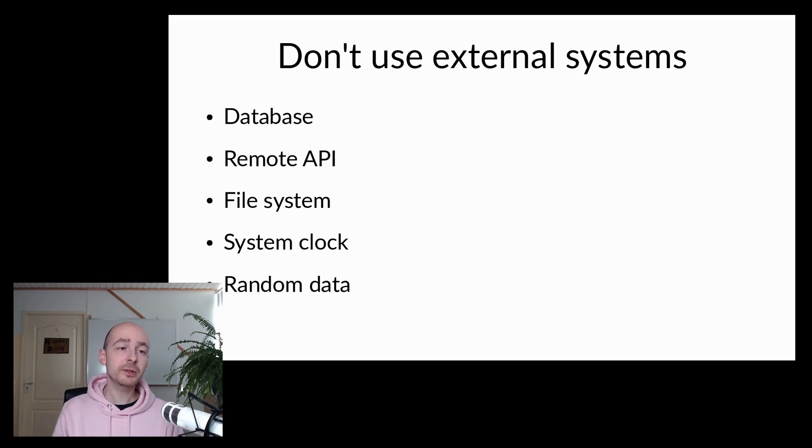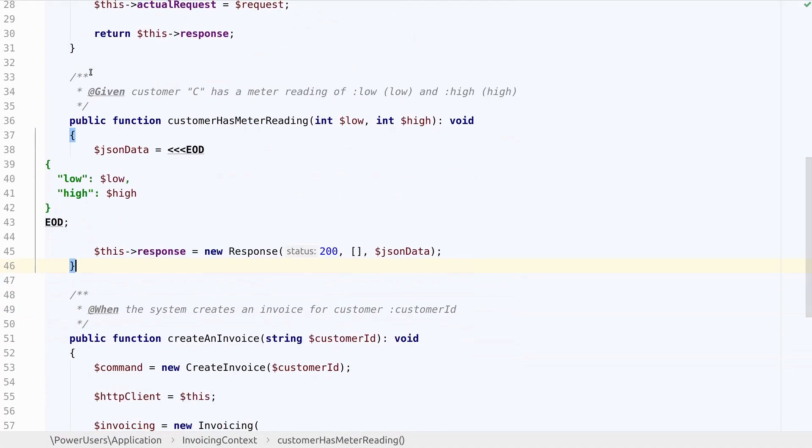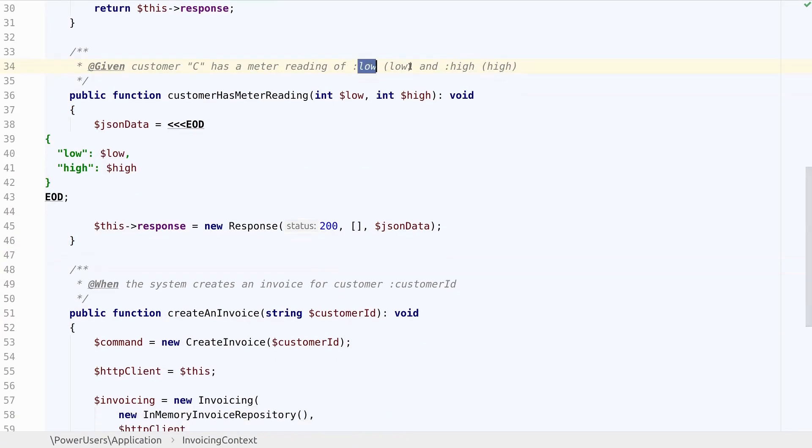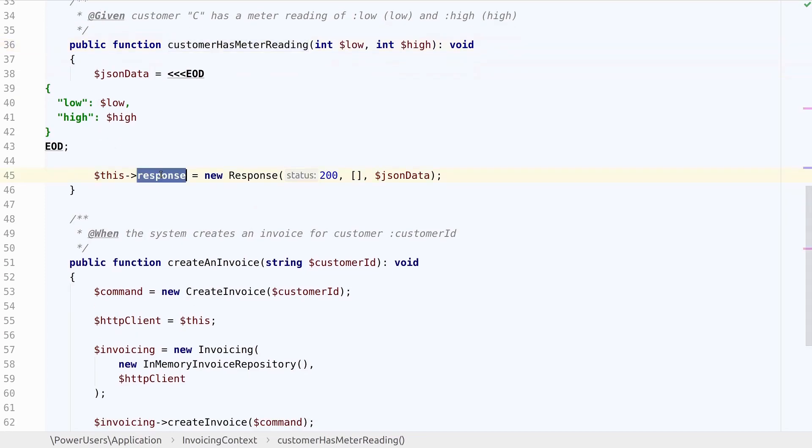In our case, we wouldn't want the actual Energira API to be used in our test scenario. If we'd still get the meter readings directly from the Energira API using the HTTP client service, we'd have to create some kind of fake response in our tests. Our step definition would then look something like this. First, we have a step definition for given customer C has a meter reading of low and high. Here you can see the placeholders for the actual values in our example 0 and 100. And BHAT will run this method. And in this method, we prepare the JSON data that we expect the Energira API to return to us. And we use a property on the context class to store the response that we want to later use.